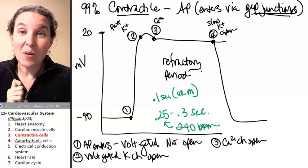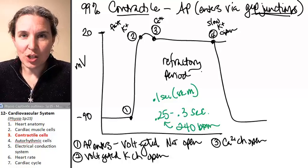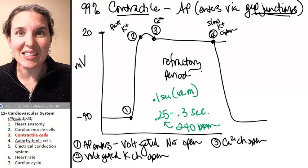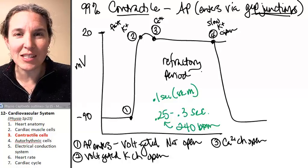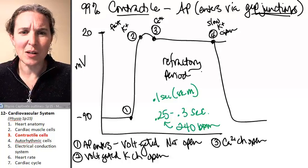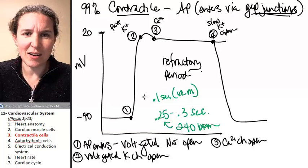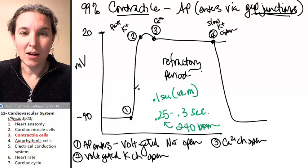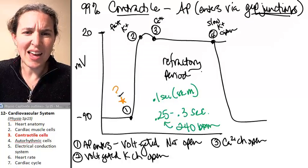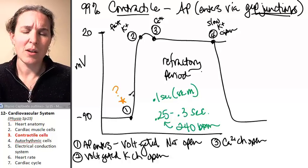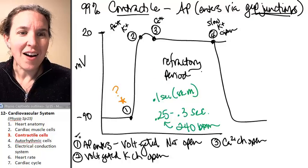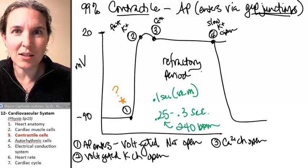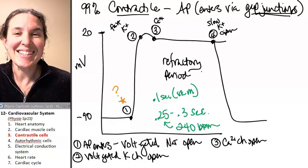How does the contractile muscle get the action potential in the first place? Because we've already established that it doesn't come from the nervous system. So, where does it come from? Where is this? Where does the action potential come from? Seriously? Could it possibly be the amazing auto-rhythmic cells? Stay tuned.